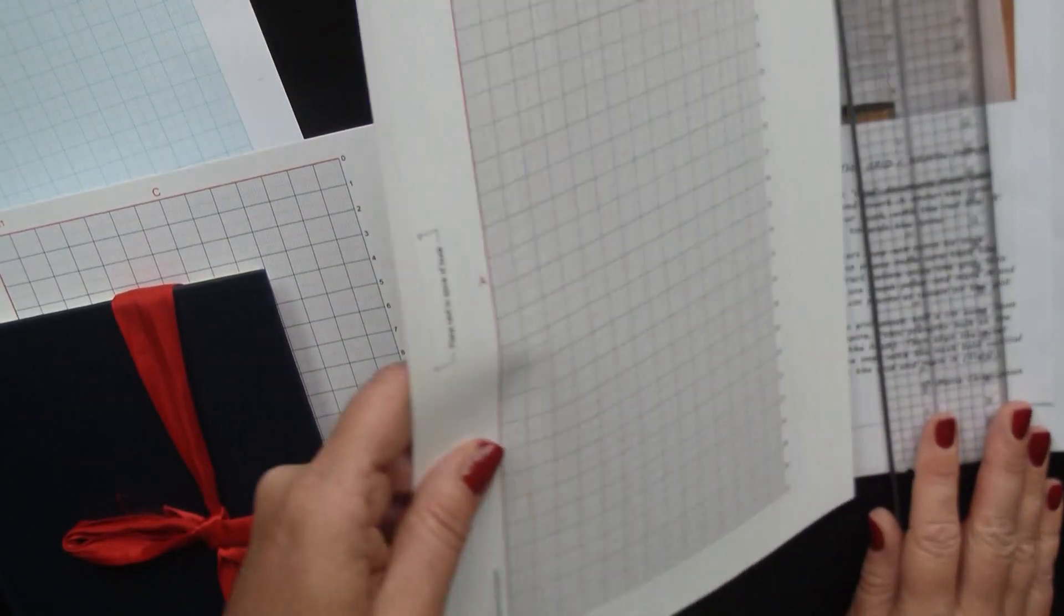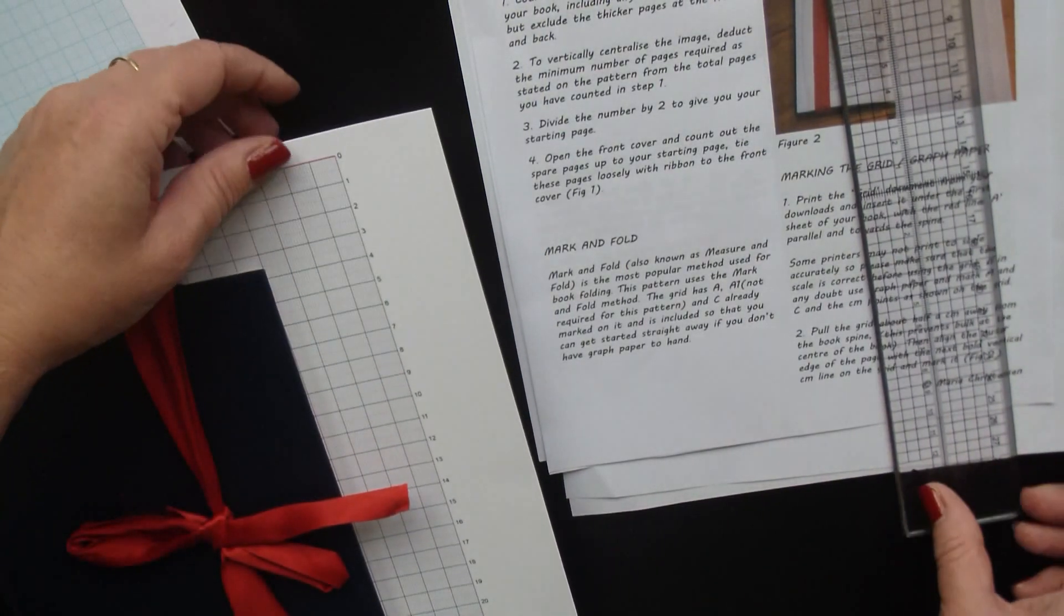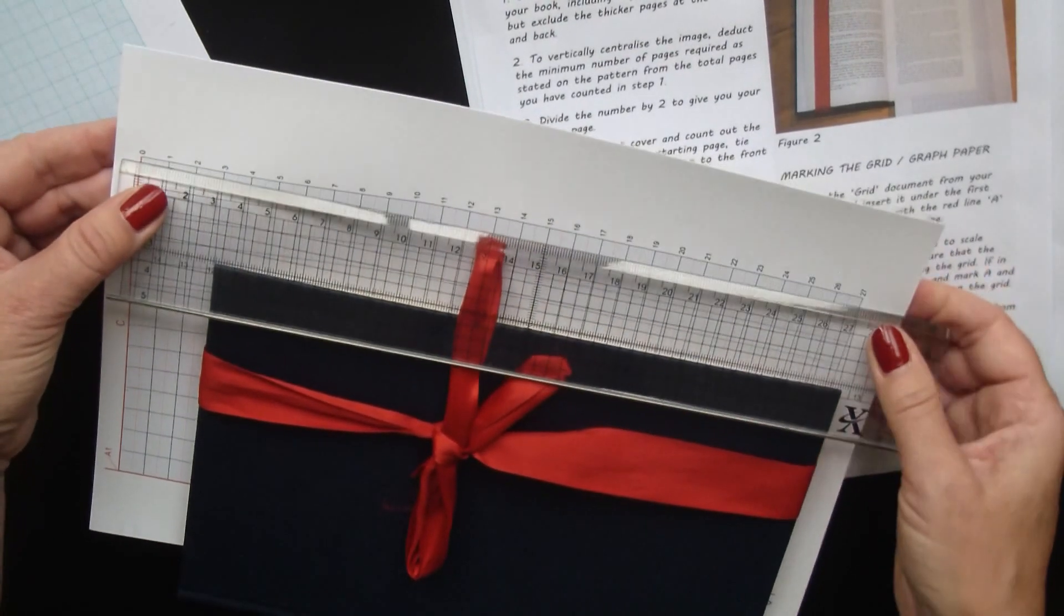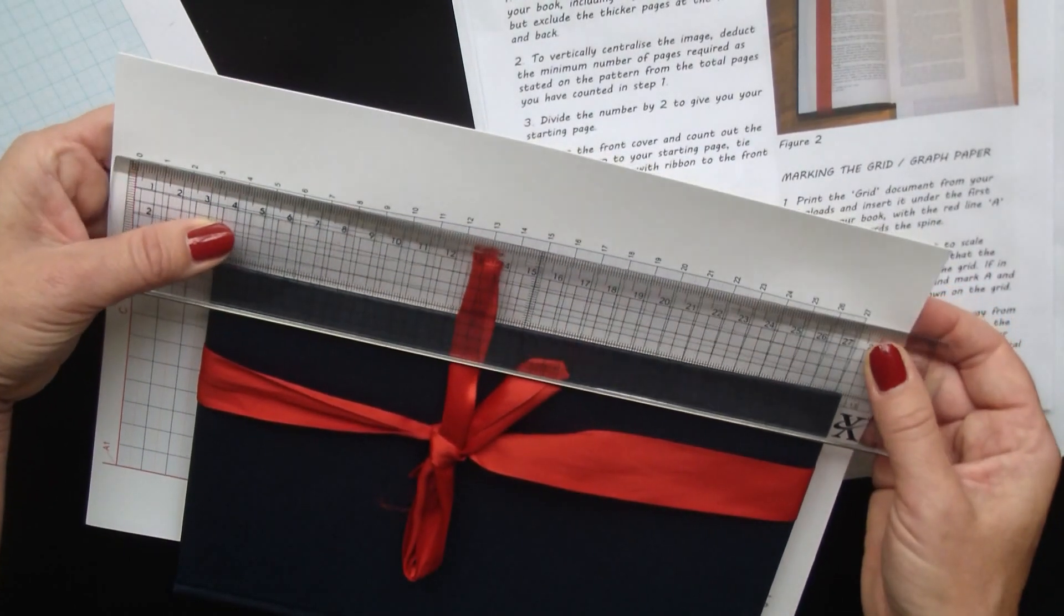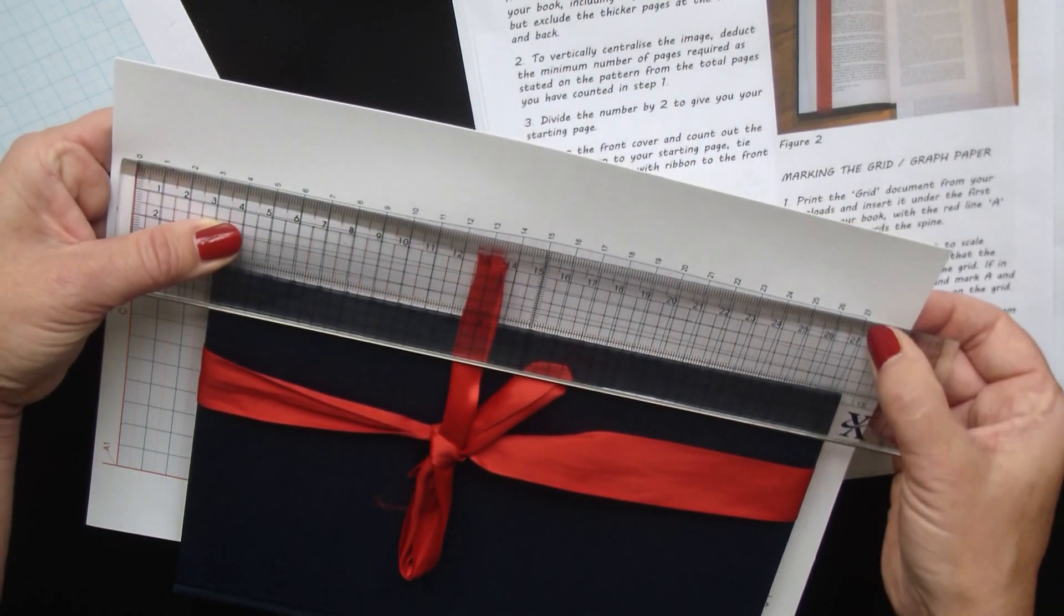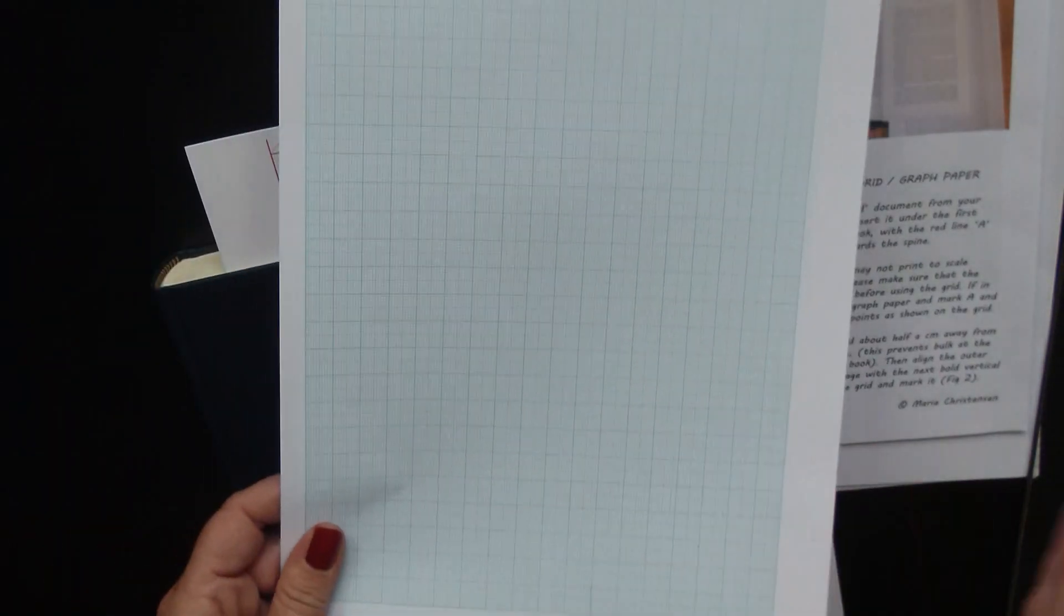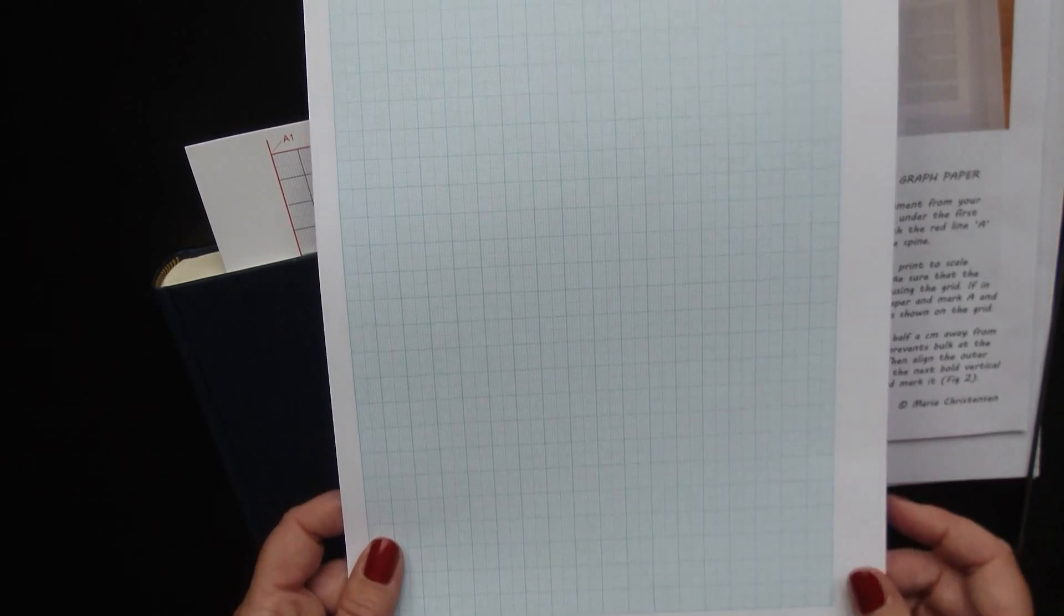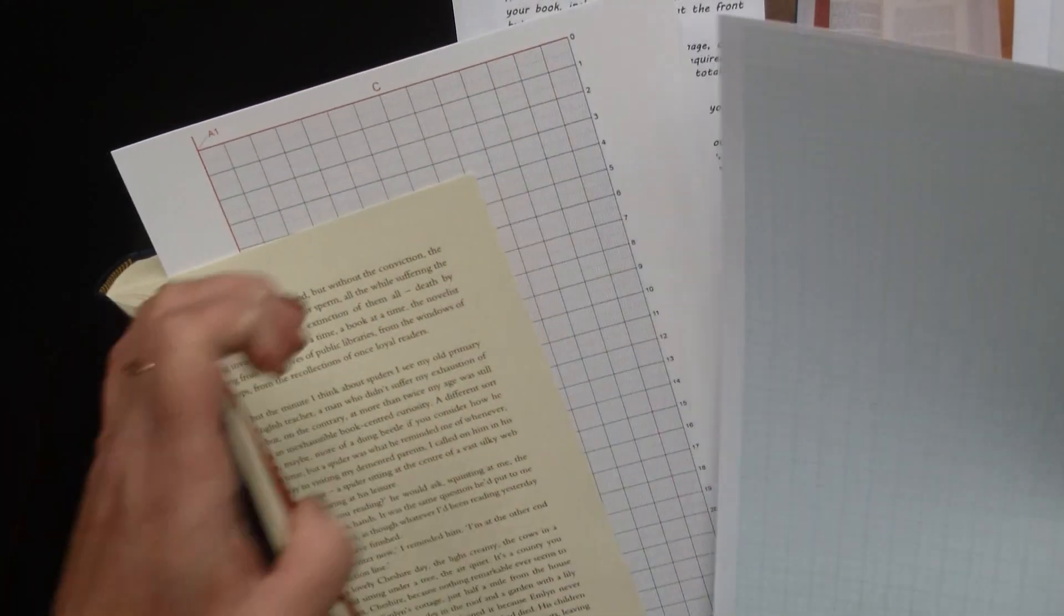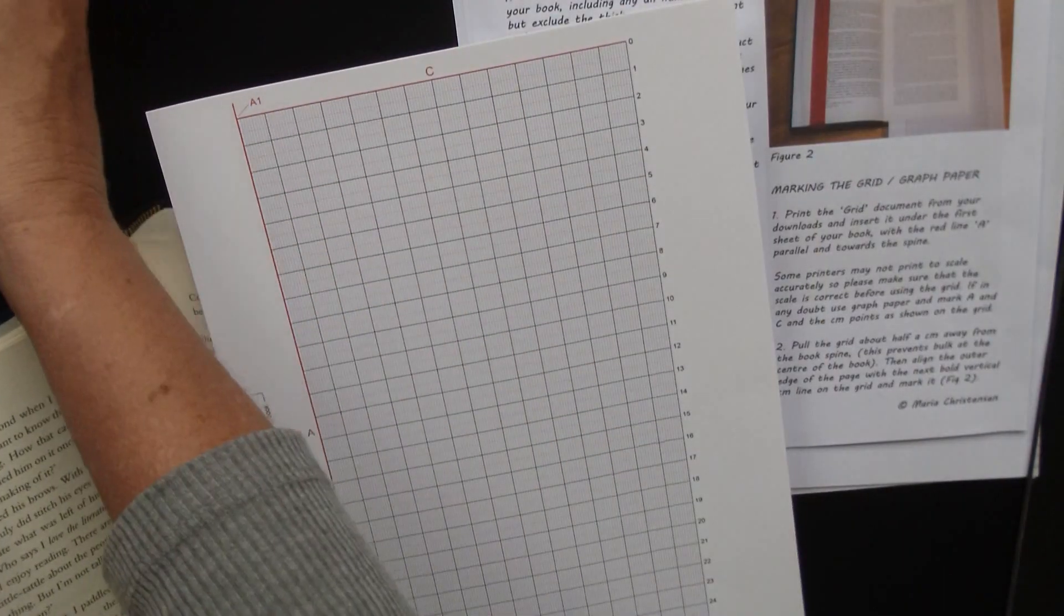It might affect your pattern adversely. So if you're in any doubt, just use a sheet of graph paper and mark up the C line and the A line that's already marked up on the grid that you would have printed off.